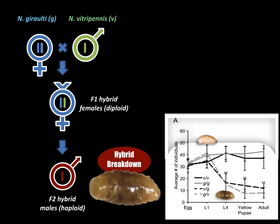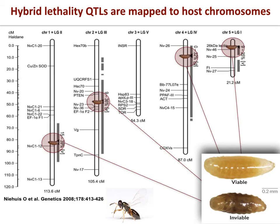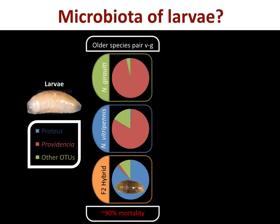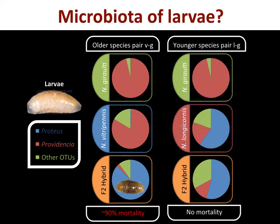For more than ten years, Nasonia biologists have studied this trait through the lens of finding host genes that affect hybrid inviability — essentially speciation genes. Those QTL analyses have mapped genetic regions to four chromosomes associated with hybrid viability. Because the hybrid larvae microbiome is different, we started thinking about whether the microbiome itself is perhaps assisting the reproductive isolation of hybrid death, contrasting with the younger species pair cross where there's no death and a microbiome resembling one parent.